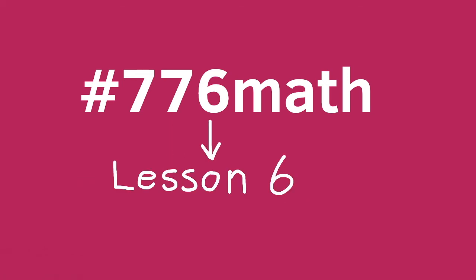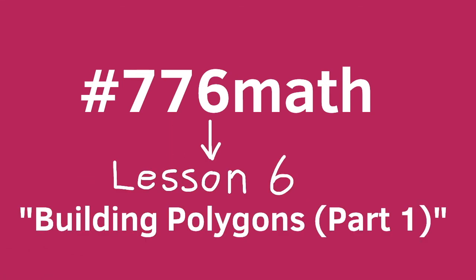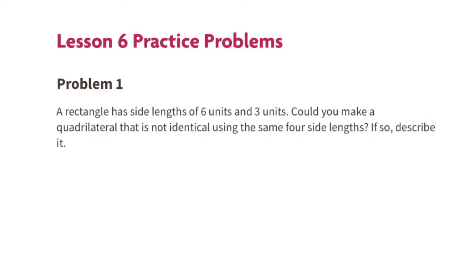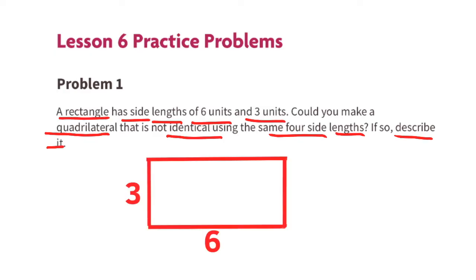7th grade, Unit 7, Lesson 6, Building Polygons, Part 1. Illustrative Mathematics Problem number 1. A rectangle has side lengths of 6 units and 3 units. Could you make a quadrilateral that is not identical using the same 4 side lengths? If so, describe it.